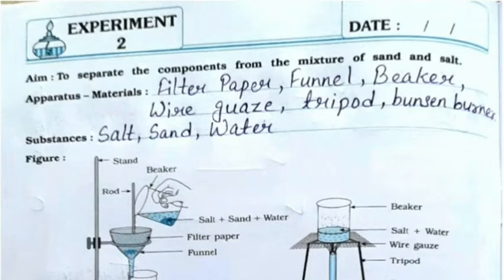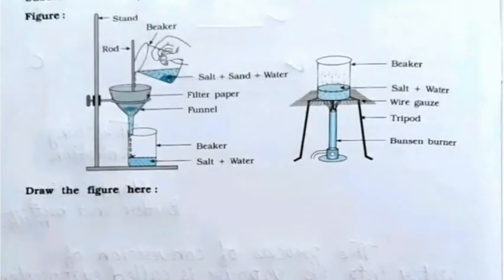The apparatus and materials for this experiment are filter paper, funnel, beaker, wire gauge, tripod, and Bunsen burner. The substances to be used are salt, sand, and water. You need to draw the figure which is given below.